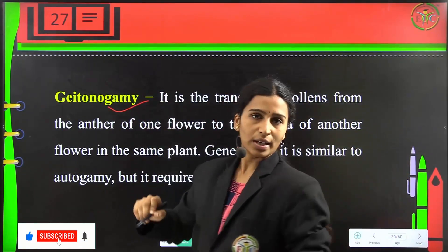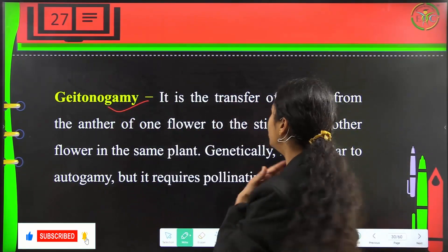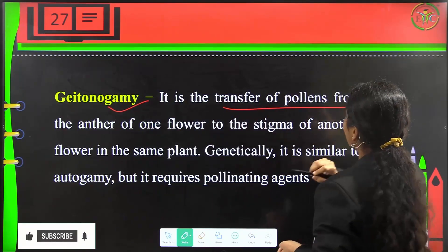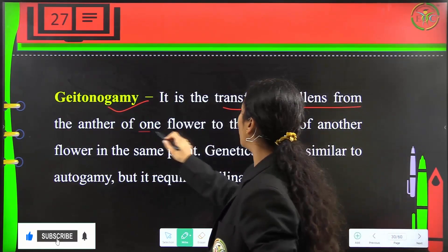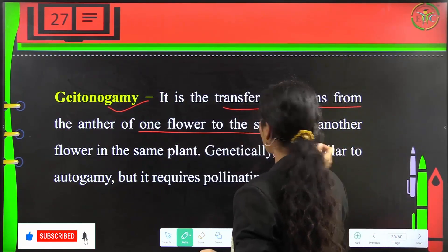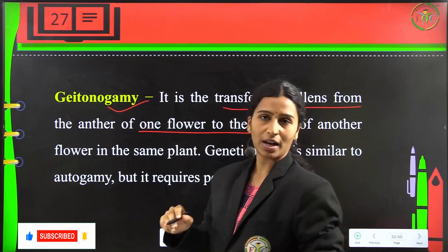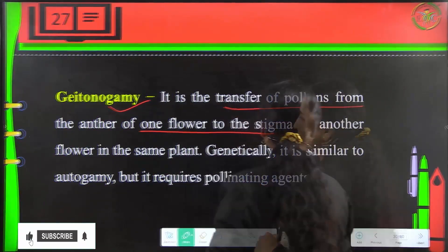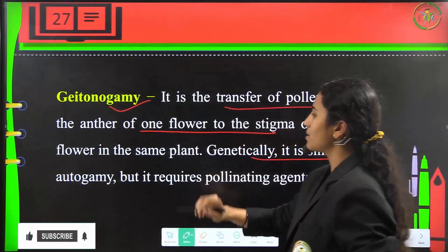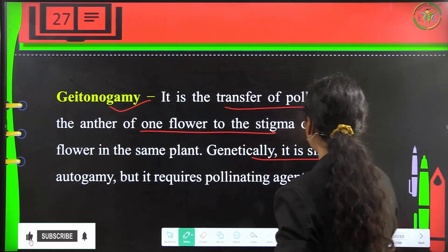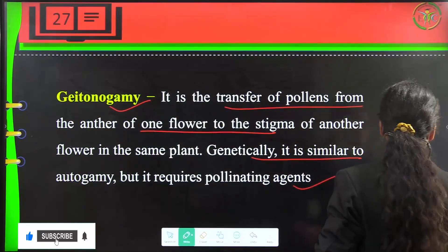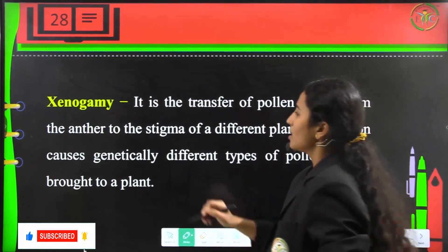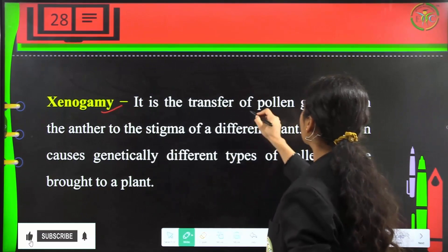Geitonogamy is the transfer of pollen from the anther of one flower to the stigma of another flower on the same plant. Genetically it is very similar to autogamy, but it requires pollinating agents. Next is xenogamy, which is the transfer of pollen grains from the anther to the stigma of a different plant.